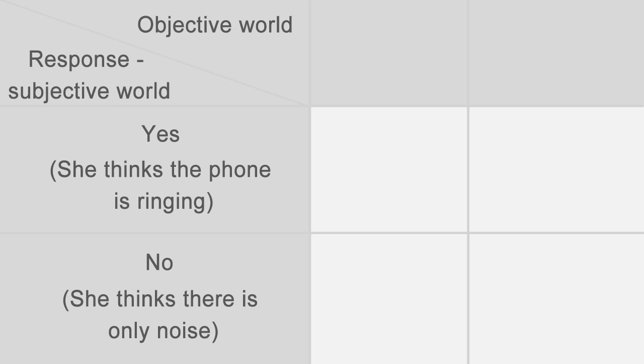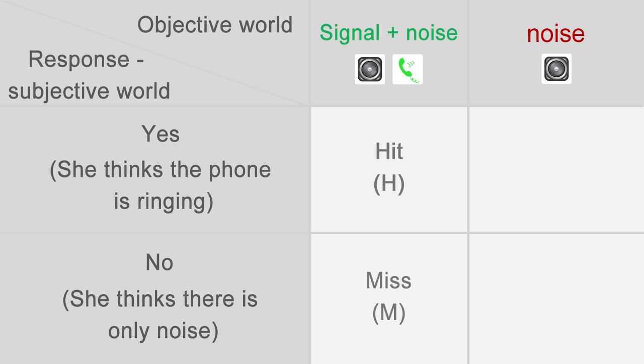Let's summarize the four conditions. When the phone actually rings, we can have a hit or a miss. When the phone does not ring, we can have a false alarm or a correct rejection.